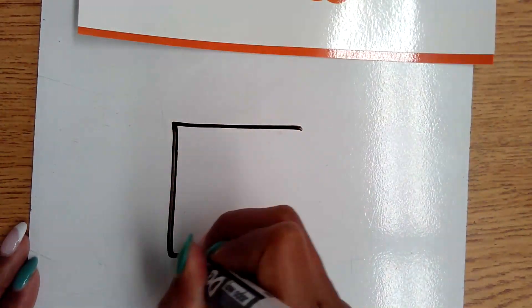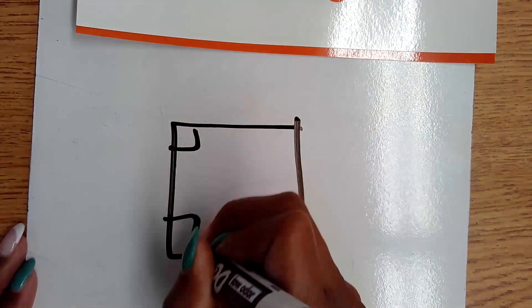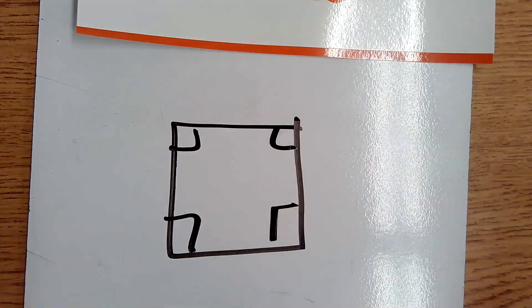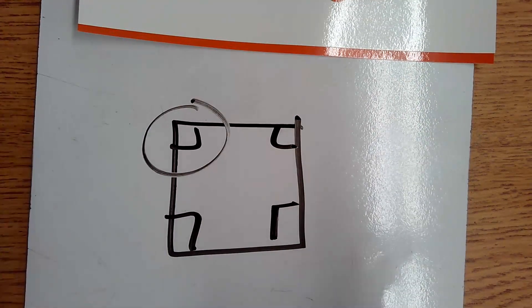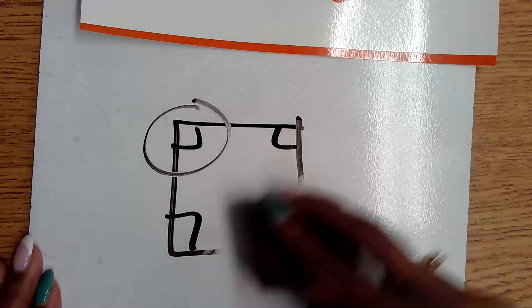Rectangles and squares all have four right angles. These angles that make the lines that make the right angles are perpendicular because as they touch, they create that right angle.